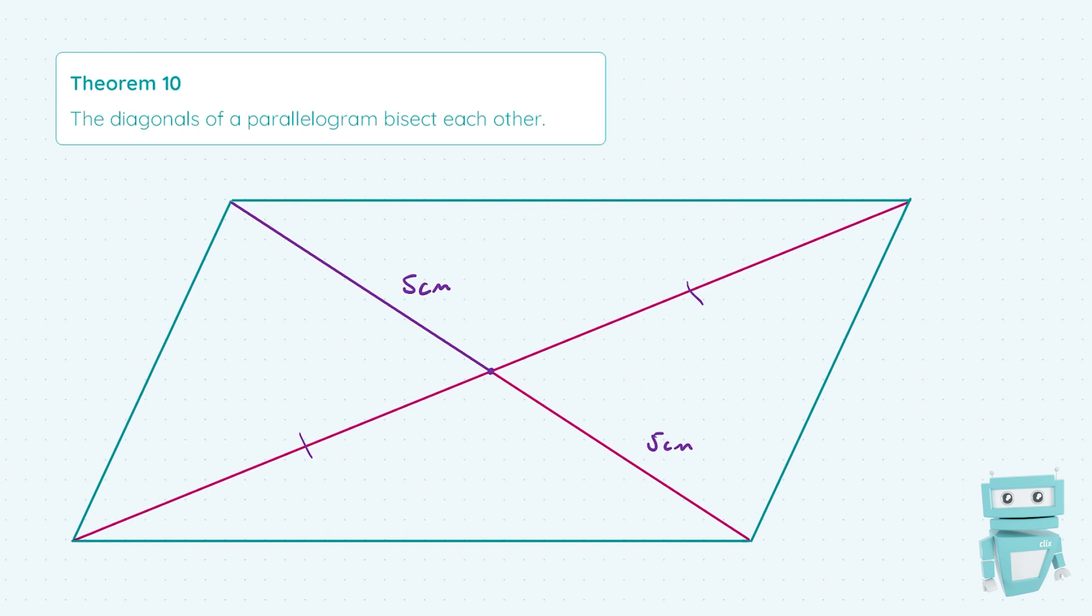So these two lines are also equal in length. That is it for this theorem and I'll see you next time.